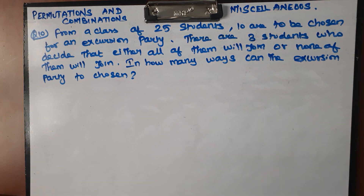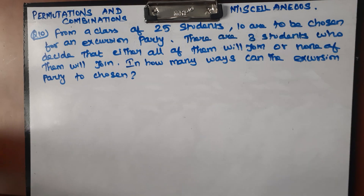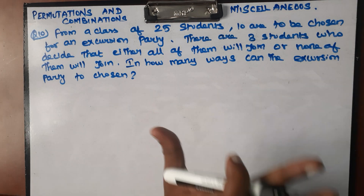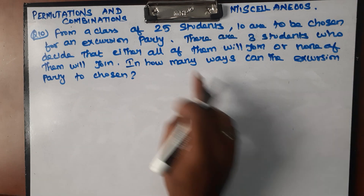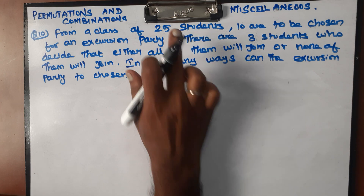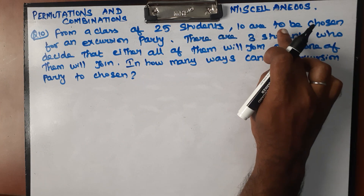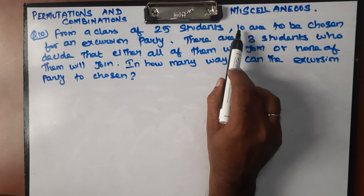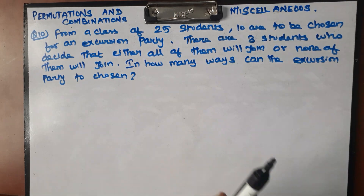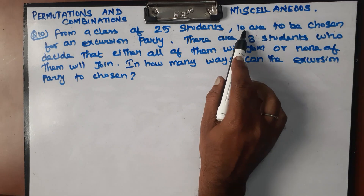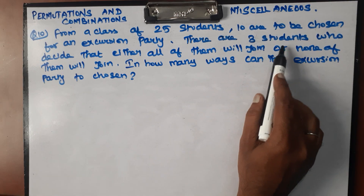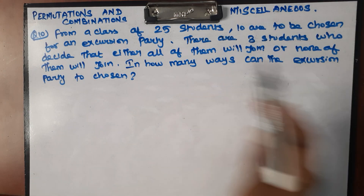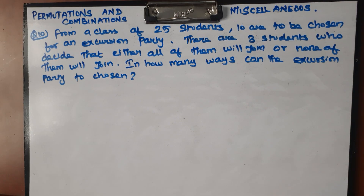So the total number of students is 25, and we need to choose 10 members. Three students have a condition. The remaining students are 25 minus 3, which equals 22 students.